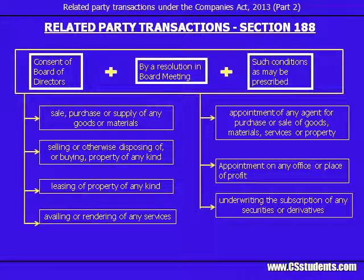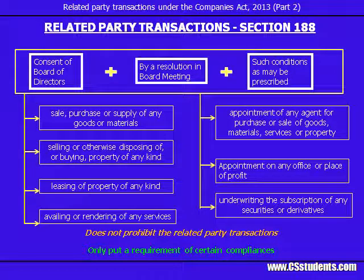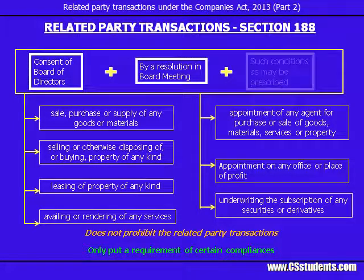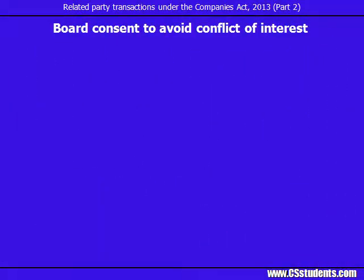So as discussed, Section 188 does not prohibit the related party transactions. It only puts certain requirements — the related party transaction should be consented by the Board through a resolution passed in the Board meeting, and subject to certain prescribed conditions. Now let's see how the consent of the Board taken in the meeting would help to avoid conflict of interest.